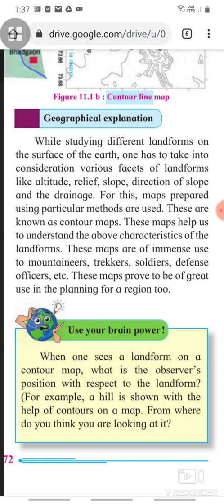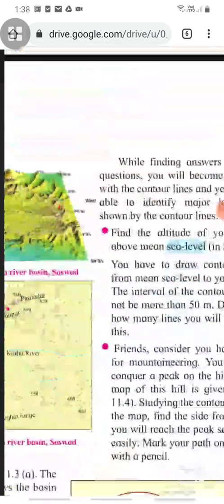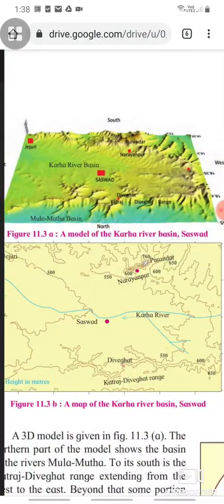Use your brainpower to answer that when one sees a landform on a contour map, what is the observer's position with respect to the landform? For an example, a hill is shown with the help of contours on a map. From where do you think you are looking at it?